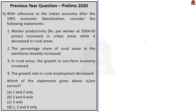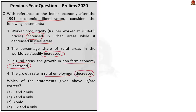First question. With reference to the Indian economy after the 1991 economic liberalization, consider the following statements. Statement 1: Worker productivity (rupees per worker at 2004-2005 prices) increased in urban areas while it decreased in rural areas. Statement 2: The percentage share of rural areas in the workforce steadily increased. Statement 3: In rural areas, the growth in non-farm economy increased. Statement 4: The growth rate in rural employment decreased. Which of the statements given above is or are correct?